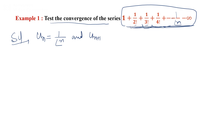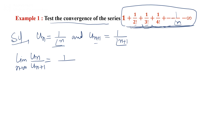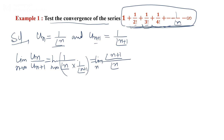The (n+1)th term is 1/(n+1)!. We check the limit: we compute u_n / u_(n+1) and apply the limit as n tends to infinity. We get (1/n!) divided by (1/(n+1)!), which can be written as (n+1)! / n! with limit as n tends to infinity.